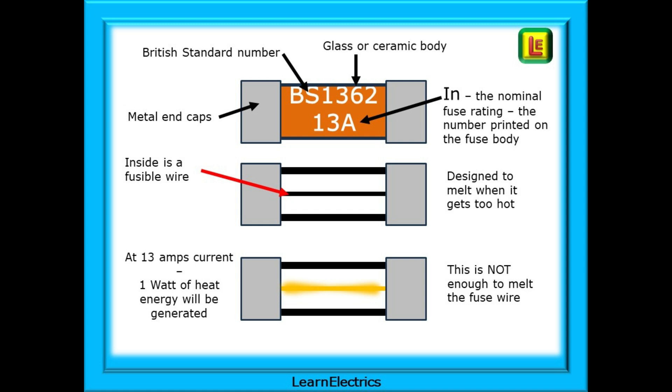A plug-top fuse in the UK should conform to the relevant British standard, which is BS1362. The fuse rating will be printed on the body, 13 amps in this case, and this is known as IN, the nominal fuse rating. Inside the fuse body is a fusible wire that is attached to the two metal end caps. The fusible wire is designed to melt when it gets too hot, and the manufacturer will blend the various metals that make up the fusible wire to achieve the standard.